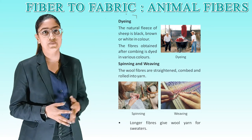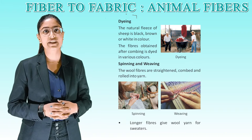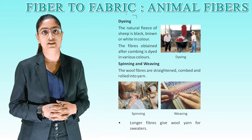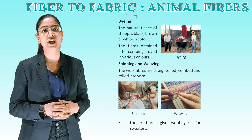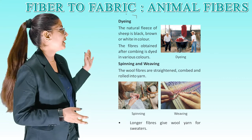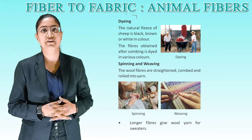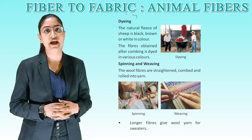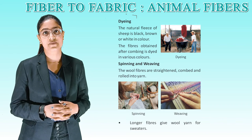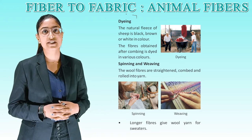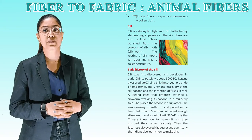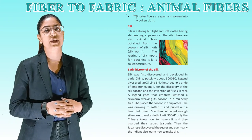Next is dyeing. The natural fleece of sheep is black, brown, or white in color. The fibers obtained after combing are dyed in various colors. Spinning and weaving: the wool fibers are straightened, combed, and rolled into yarns. Longer fibers give wool yarn for sweaters. Shorter fibers are spun and woven into woolen cloth.